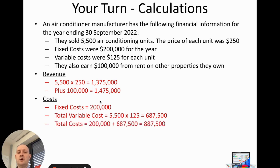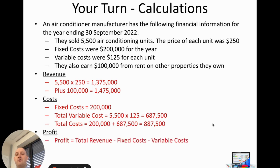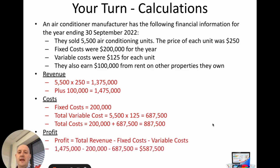Total cost is fixed cost plus variable cost: $200,000 plus $687,500 equals $887,500. Profit is total revenue minus fixed cost minus total variable cost: $1,475,000 minus $200,000 minus $687,500, giving an overall profit of $587,500.